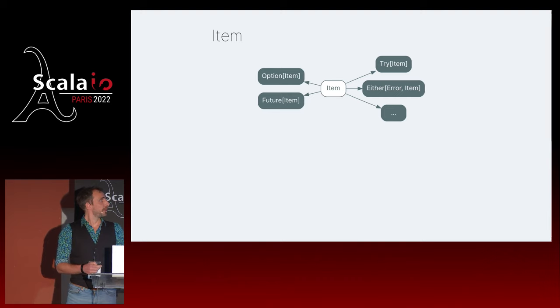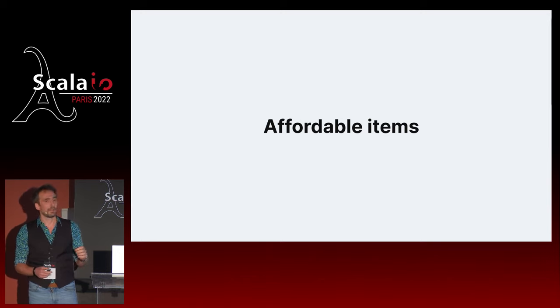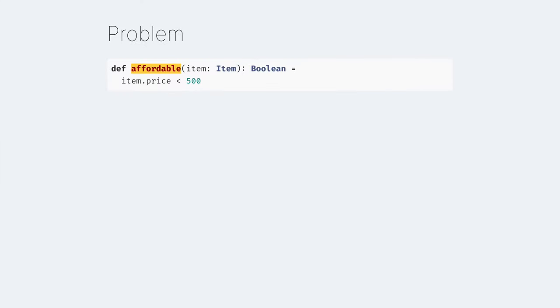The point of this talk is to show how you can work against item but reuse that function in any of these contexts. The first thing we're going to do is check for items that are affordable, because I'm trying to buy a PlayStation 5, but not at any cost. The basic implementation is fairly simple: affordable, given an item, checks whether the price is affordable and returns that. But if we go through the option case and the try case by hand, there's a lot of boilerplate, and we should not be doing this.